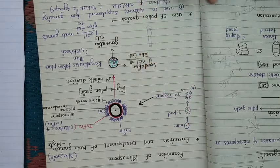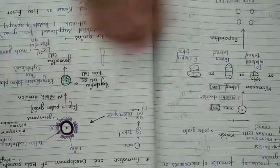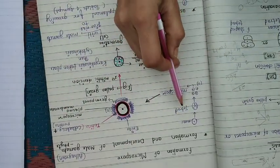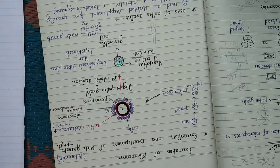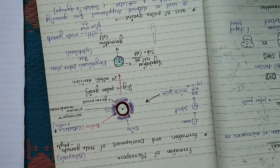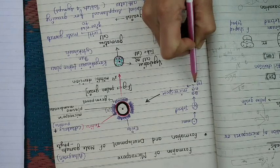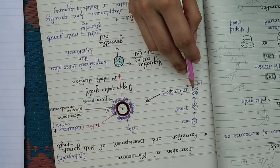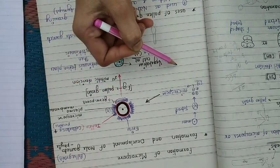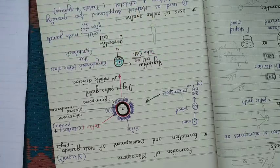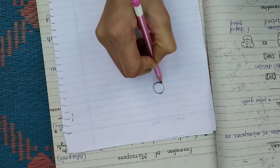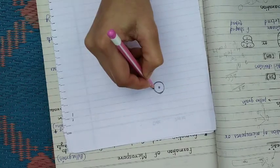Let me repeat this part. This is a microspore mother cell, this is tetrads formation, and after the formation of tetrads it will be converted into a microspore. Now this is the microspore structure. Suppose this is your microspore.